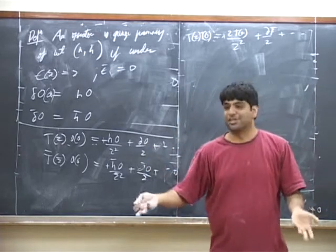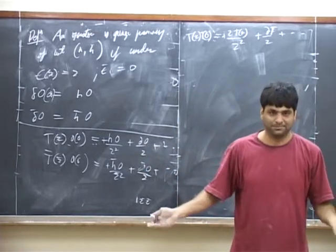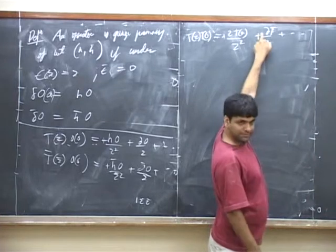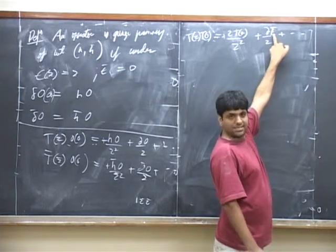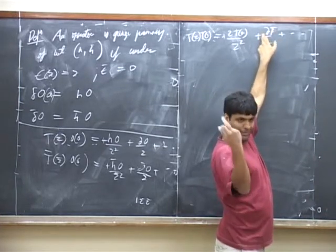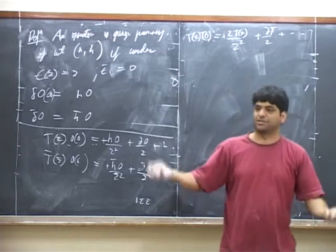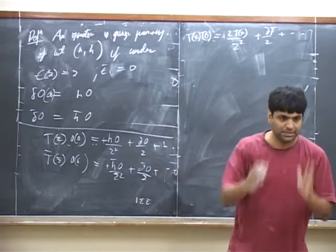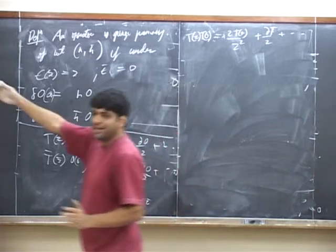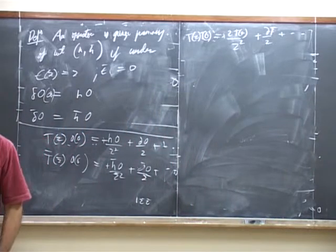1 over z squared is also dimension 2, because z squared is dimension minus 2. This also works, because T is dimension 2, the derivative is dimension 1, and 1 over z is dimension 2. So everything that we have on the right hand side must be dimension 4.